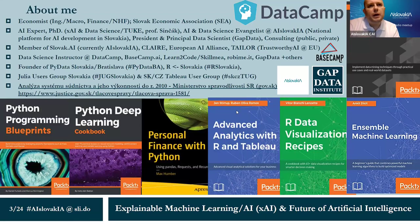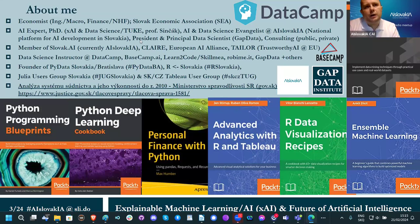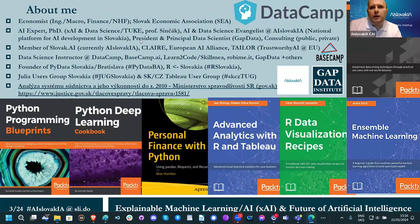A short introduction about me: my original profession is economist — I studied finance and macroeconomics. Later I switched to data science as a consultant, and currently I'm also an AI researcher at a university. I teach and mentor students at Technical University Košice under Professor Peter Sinčak, who is the former head of the scientific board at AI Slovakia, where I also work as an AI/data science evangelist. I also have my own research institute called Gap Data Institute, covering consulting for public and private sectors.